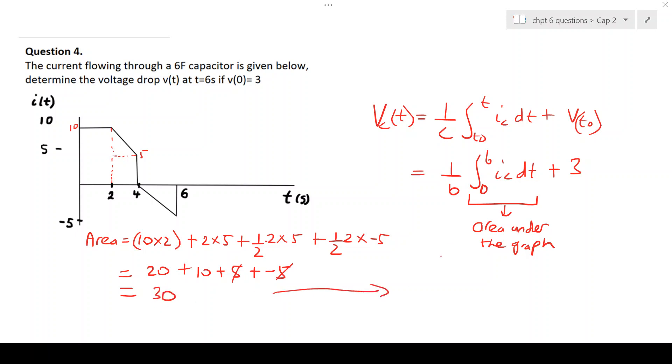Which we can then bring to this side. So this will be 1 over 6, the area under the graph is 30, plus 3. So that gives you 30 divided by 6, which will give you 5 plus 3, and that will give you a final value of 8 volts.